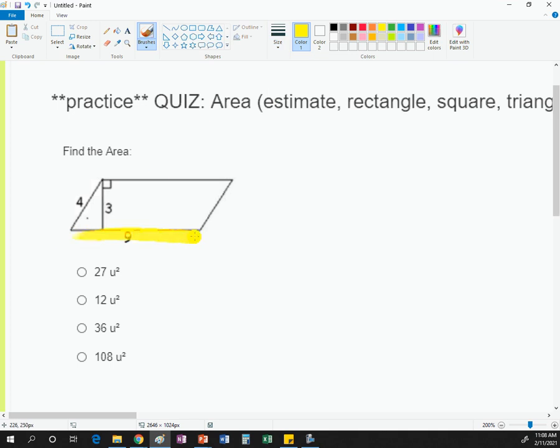Our base is 9. The height is 3, so it should just be 9 times 3, and you get 27 for it.